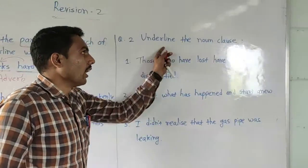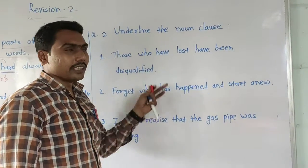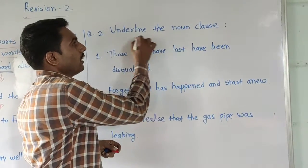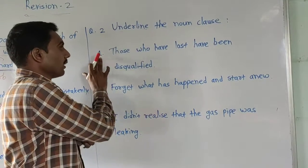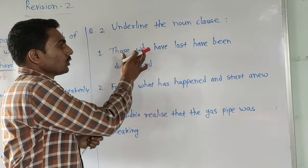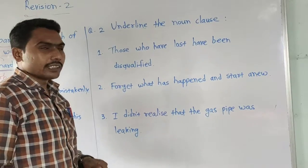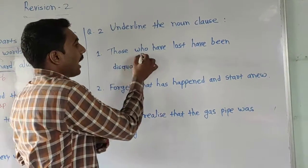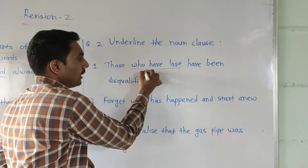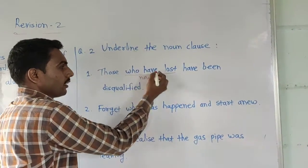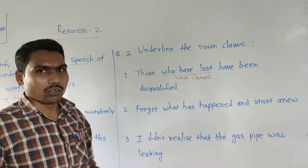Now, underline the noun clause. First, we want to read this sentence carefully and underline only the noun clause. The first one: 'Those who have lost have been disqualified.' In this sentence, 'who have lost' is a noun clause. You can write here: noun clause. Underline 'who have lost.'